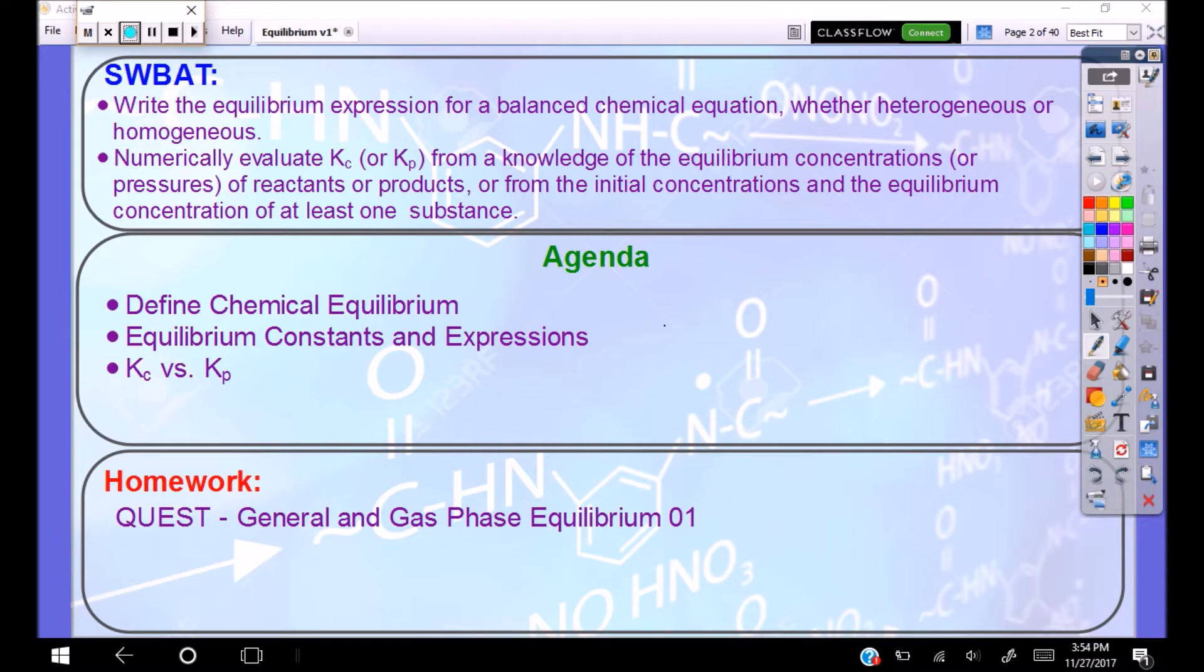Today we're going to dive into equilibrium and we'll be able to write equilibrium expressions for balanced chemical equations, whether they are heterogeneous or homogeneous. We're going to evaluate our K for our reactions, whether it's Kc, which is dealing with concentrations, or Kp, dealing with pressures, both the reactants and the products, or by calculating it from the initial concentrations and the equilibrium concentration of at least one substance. The quest that goes with this is general and gas phase equilibrium number one.